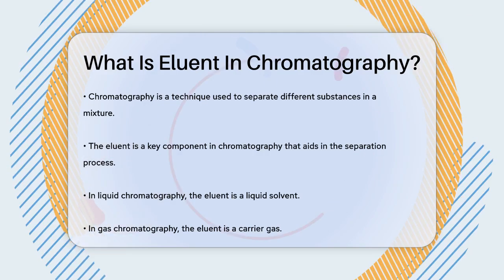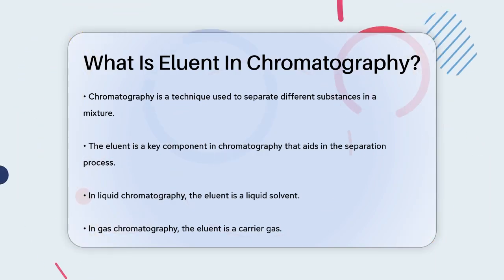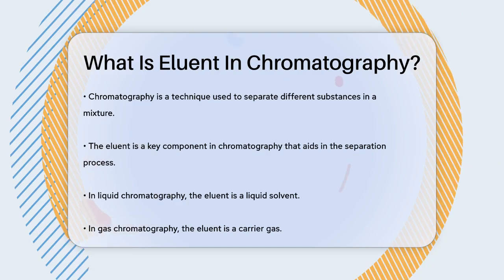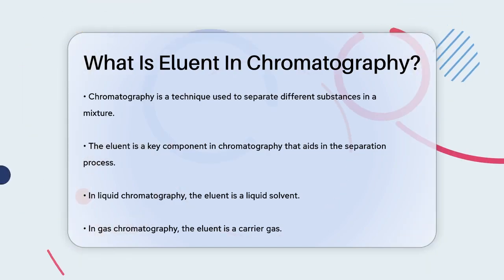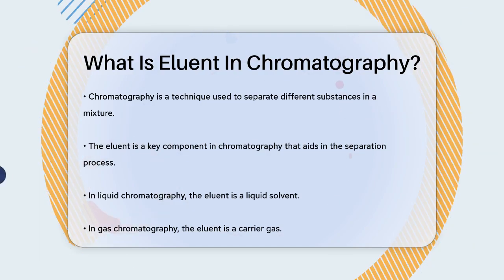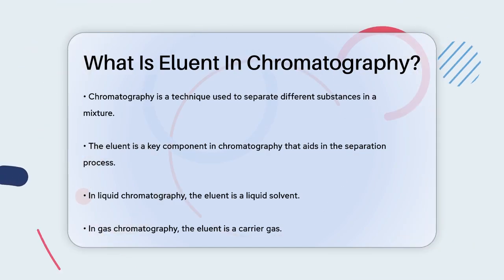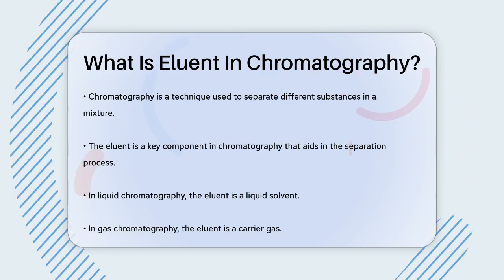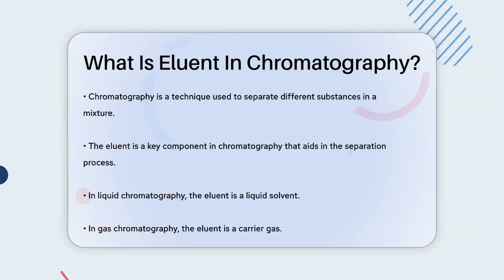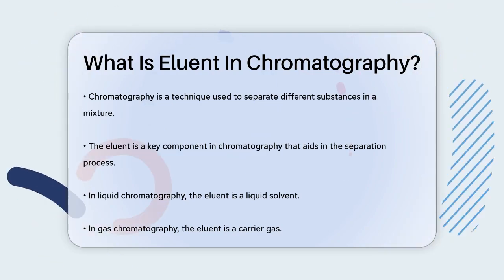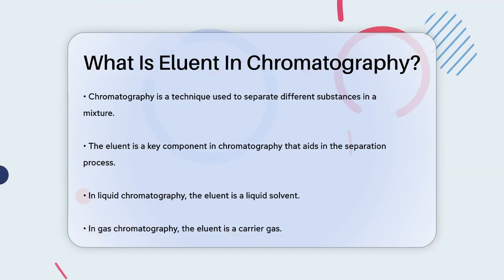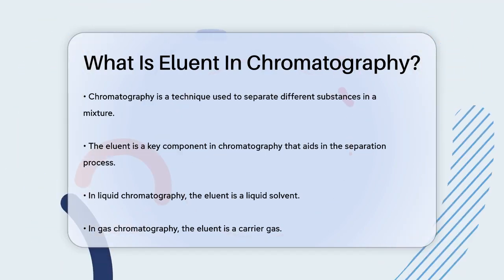In chromatography, the eluent is a substance that helps separate and move the components of a mixture through a column or a plate. For example, in liquid chromatography, the eluent is a liquid solvent, while in gas chromatography, it's a carrier gas.